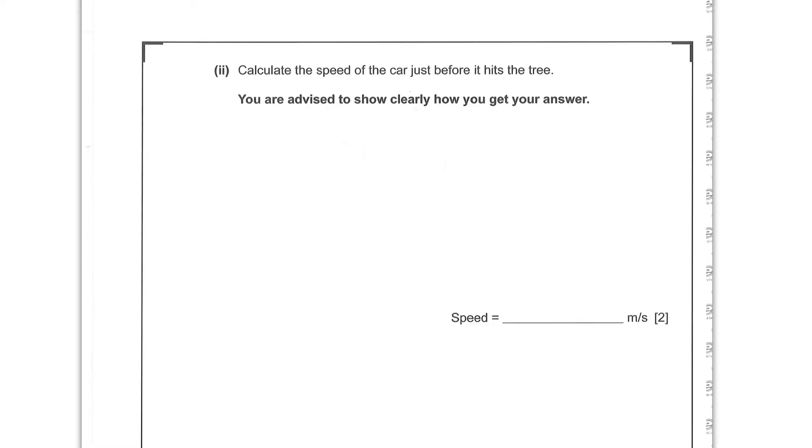Calculate the speed of the car just before it hits the tree. You are advised to show clearly how you get your answer. So what we have got here is a collision, like a UVAST collision. So if we list what we know, u is an unknown, v is zero because it finishes hitting the tree, it stops. A is going to be minus 15 meters per second squared. And the time for the collision is 2 seconds. So this is easy. This is going to be v equals u plus at. And since we want u on its own, u is going to be v minus at.